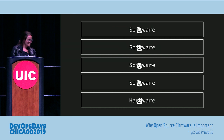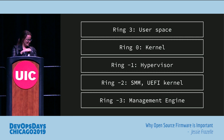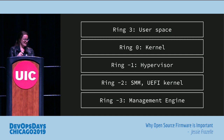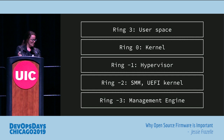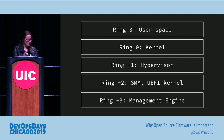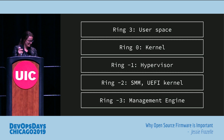If we look at the privilege levels for this kind of stack, you have ring three which is user space. Ring two doesn't really exist anymore — it was like drivers, same with ring one. Ring zero is your kernel space. Then ring negative one, which is your hypervisor like Xen, KVM, or whatever you choose to use. Then ring negative two, which is system management mode and the UEFI kernel. And then ring negative three at the very bottom, which is the management engine if you're on x86, with equivalents on other processors.